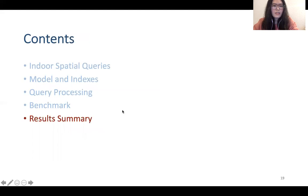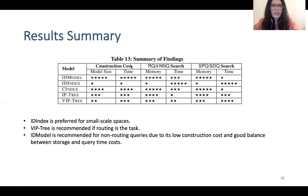Then we report the results and summarize the pros and cons of all techniques. Here is the summary of findings. ID model incurs minimum space and time cost in construction. And it performs well for range query and KNN query. But its performance for SPQ and SDQ is not very good.